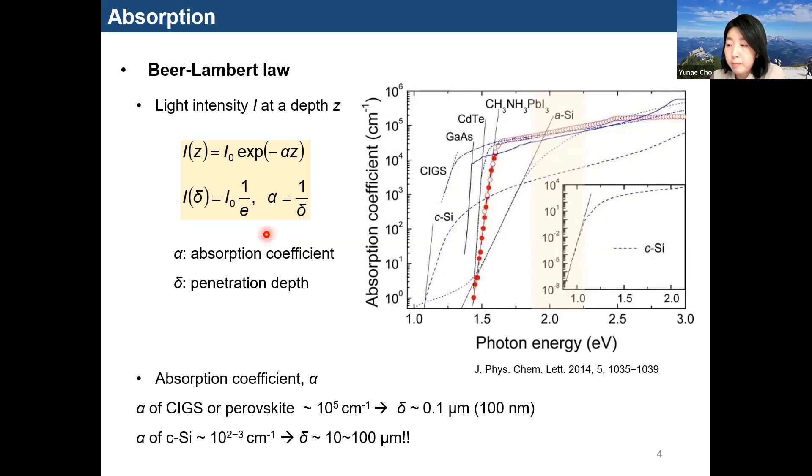If you look at the graph on the right, you can see the absorption coefficients of several interesting materials, for example, CIGS, silicon, and perovskite. You can see that the absorption coefficients of CIGS and perovskite is much higher than that of the crystalline silicon in the visible range.